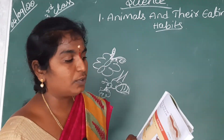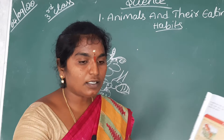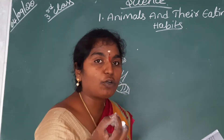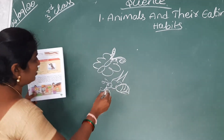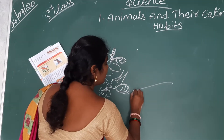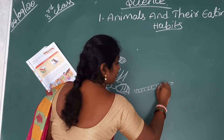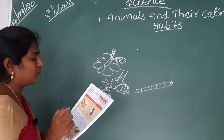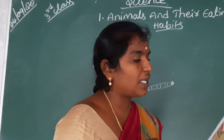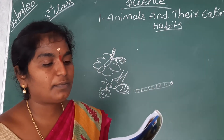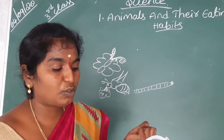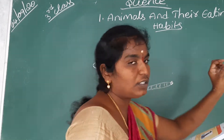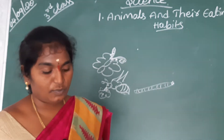Earthworm — we see earthworms in the soil. The earthworm has a whole mouth. It eats mud, dead animals, and dead plants.